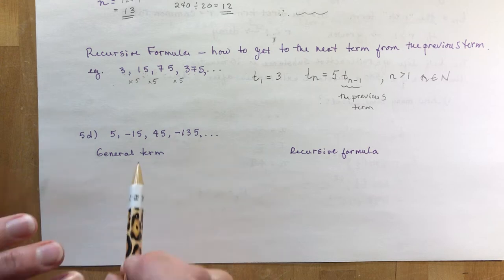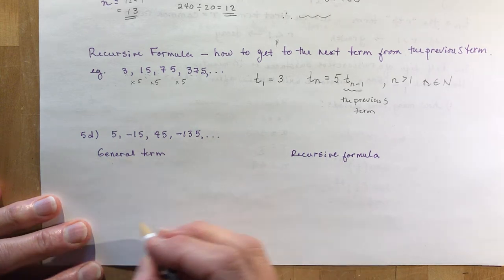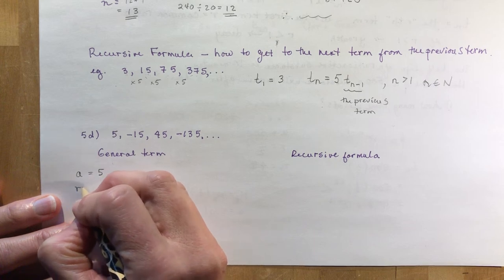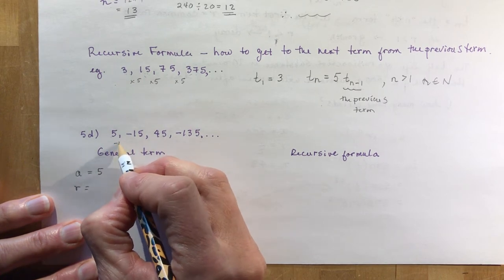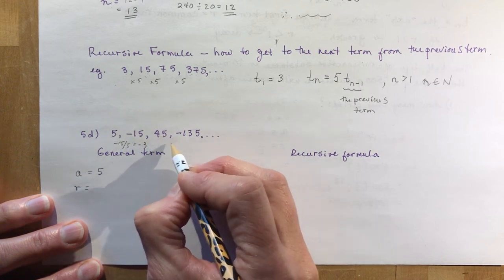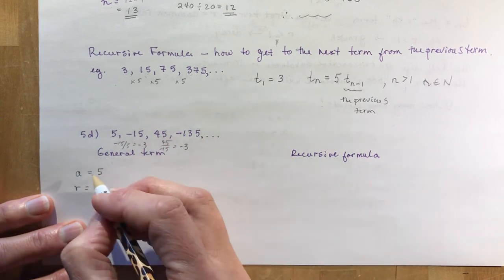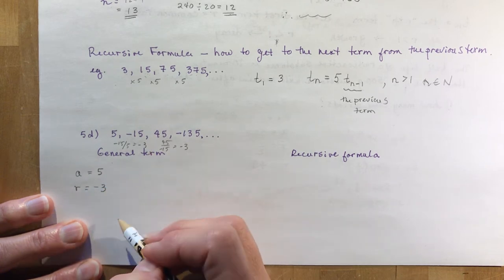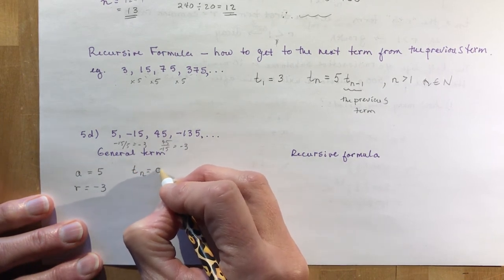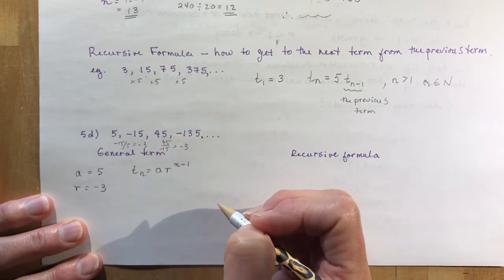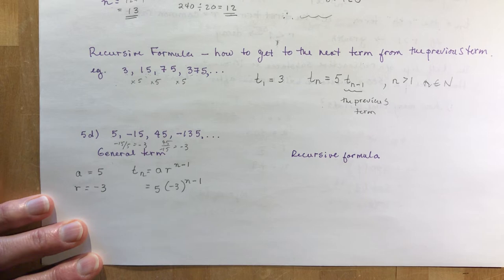Homework question 5d: find the general term and recursive formula for the sequence 5, -15, 45... Write down what you know: a equals 5. For r, divide: minus 15 over 5 equals minus 3. Check: 45 divided by minus 15 is also minus 3. So r equals negative 3 — you can have a negative or fractional ratio.